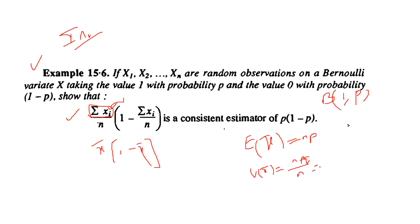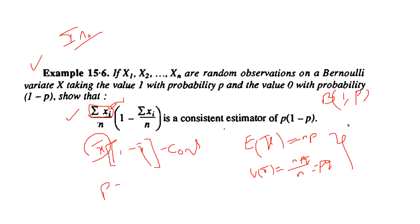Since x̄ is a consistent estimator for p, and x̄(1 − x̄) is a polynomial — hence a continuous function — by the invariance property, x̄(1 − x̄) is a consistent estimator for pq = p(1 − p).